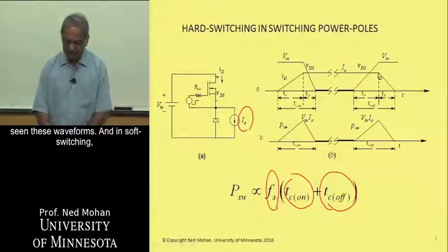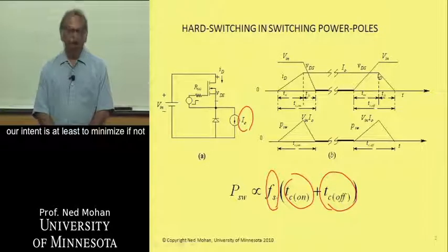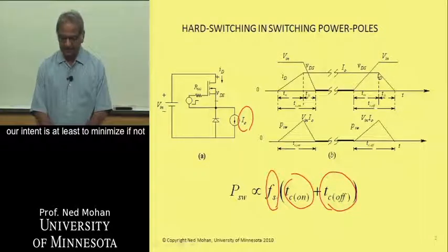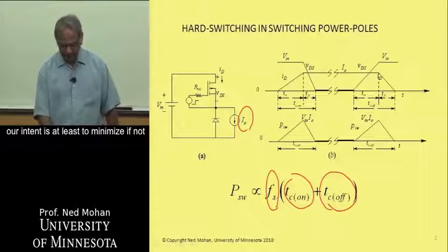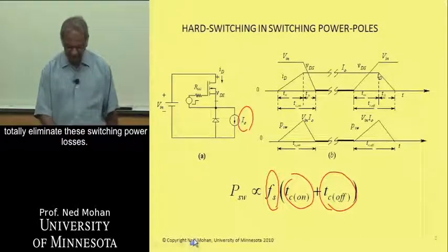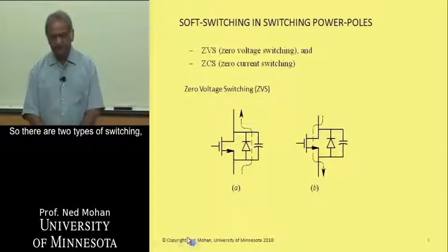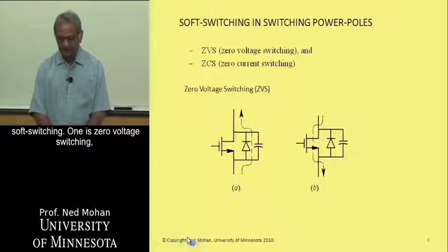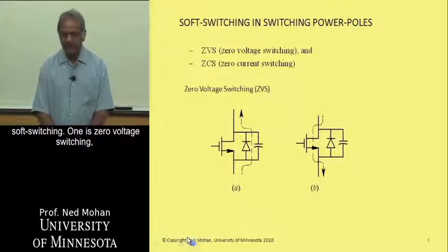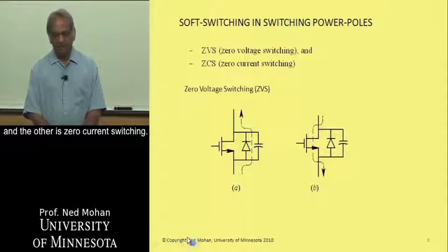We have seen these waveforms, and in soft switching, our intent is to at least minimize, if not totally eliminate, these switching power losses. So there are two types of soft switchings. One is zero voltage switching, and the other is zero current switching.